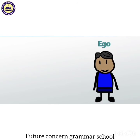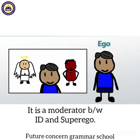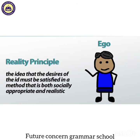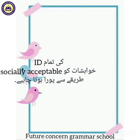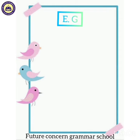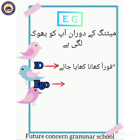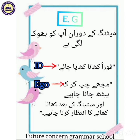Third is the ego. Personality mein ego is the component which makes decisions — it is a moderator. Ego reality principle par work karti hai, aur is ke mutabiq id ki tamam desires ko socially appropriate aur realistic way mein satisfy hona chahiye. Agar meeting wali example ko continue karein, toh us mein id demand karegi keh foran khaana khaya jaye, lekin ego act karte hue yeh kahegi keh mujhe chup karke baith jaana chahiye aur meeting ke end hone ka intezaar karna chahiye, taake main sab ke saath khaana kha sakoon.